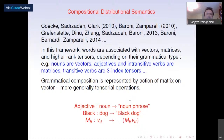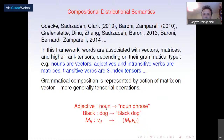In compositional distributional semantics, originating around 2010, the basic idea is to generalize the association between vectors and words: nouns are vectors, adjectives and intransitive verbs are matrices, transitive verbs are three-index tensors, and so on. Grammatical composition is represented by the action of a matrix on a vector. For example, an adjective acts on a noun to give a noun phrase — 'black' takes 'dog' and gives 'black dog', represented by a matrix for 'black' acting on a vector for 'dog'.